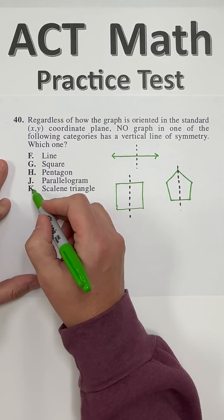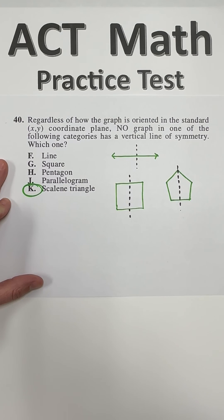Since I've proven four of the five, the only one I can't prove is K, that's got to be my answer.